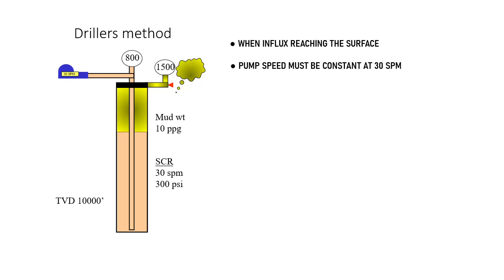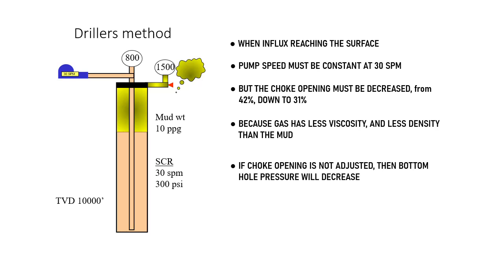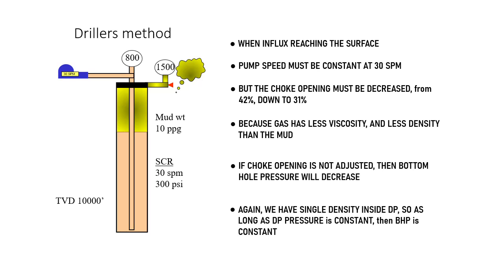When the gas influx reaches surface, the choke opening must be decreased. In this example, from 42% to 31%, because the gas has lower viscosity and lower density compared to mud. If the choke is not adjusted, bottom hole pressure decreases.